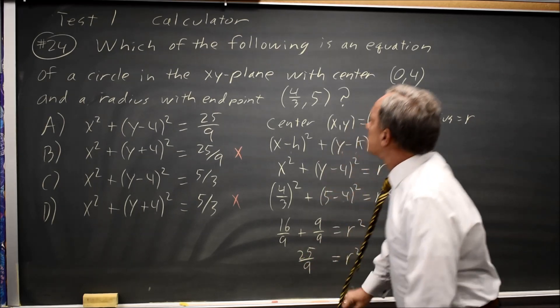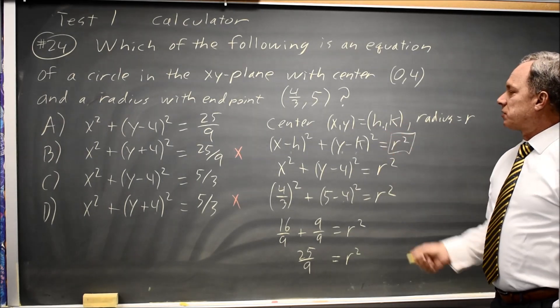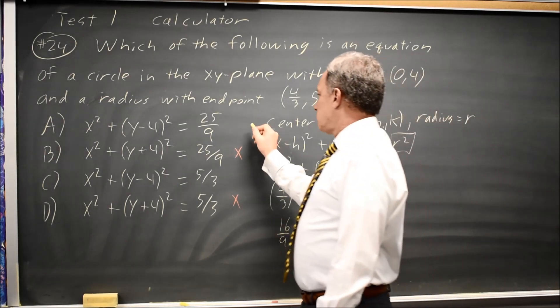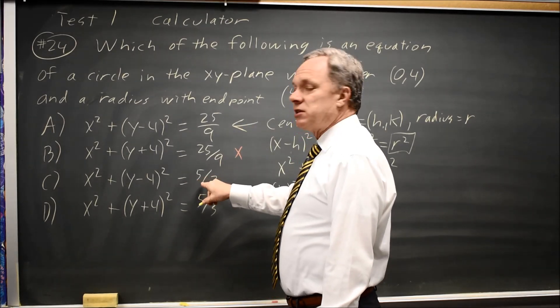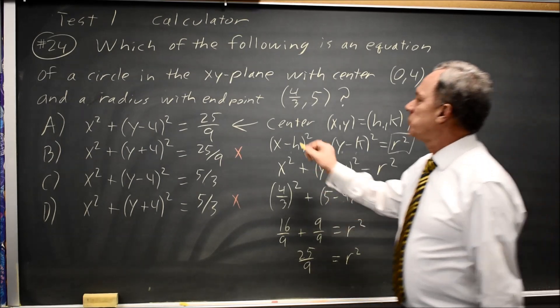And the right-hand side of this equation, in the general equation for a circle, is r squared, not just r. Choice A has r squared on the right. Choice C is the distractor with only r on the right. So the correct answer would be A.